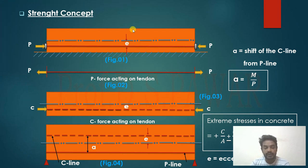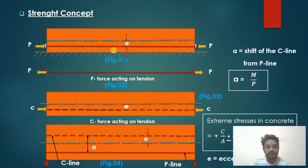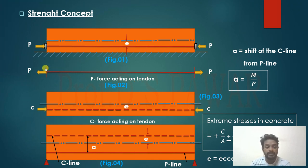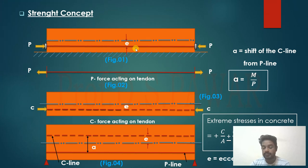Figure number one shows the prestress beam placed on the ground without any superimposed load or external load — simply laid on the ground. Figure number two shows the P force acting on the tendon. Figure number three shows that when the prestress force is applied on the tendon, the stress is also going to act on the concrete. Due to this, stresses develop in the concrete, and the line of action of force on the concrete is called the C force line or C-line.